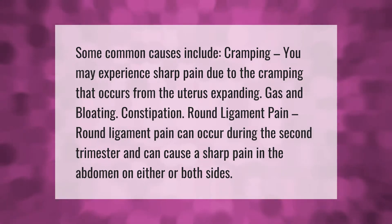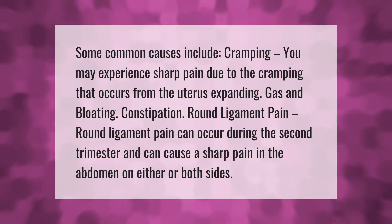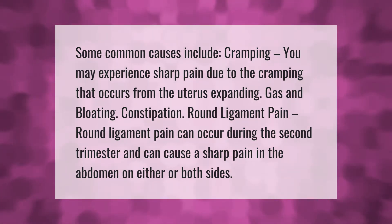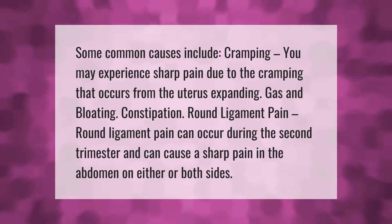Some common causes include cramping — you may experience sharp pain due to the cramping that occurs from the uterus expanding. Gas and bloating, constipation, and round ligament pain can occur during the second trimester and can cause sharp pain in the abdomen.